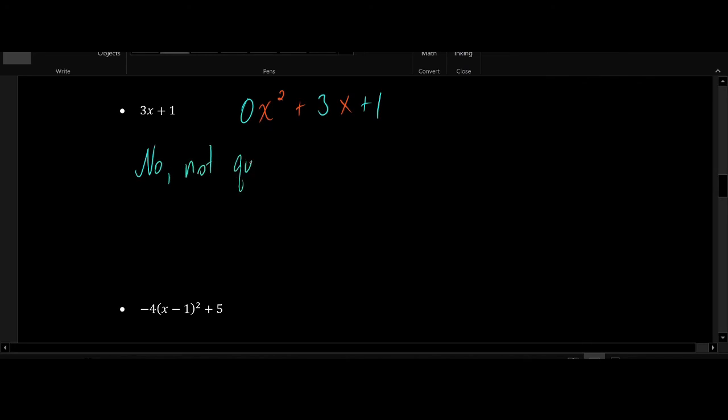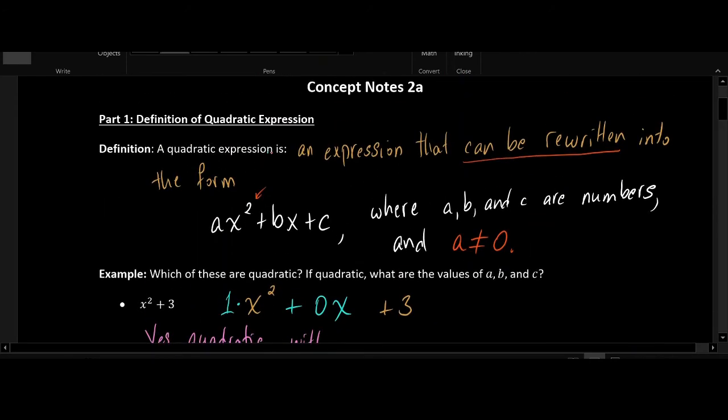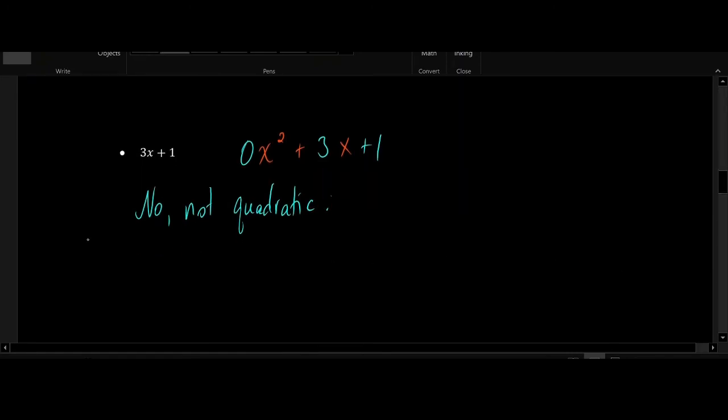This is not quadratic. And the problem is the a value. Let's scroll back up to the definition and remind ourselves that one of our conditions was that the a value, the number multiplied by x squared, had to be non-zero. But in this case the number multiplied by x squared is 0, and for that reason the expression is not quadratic.